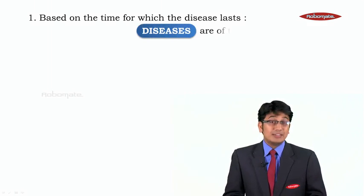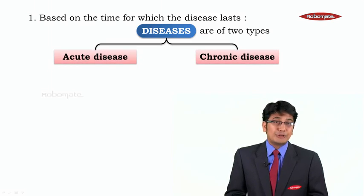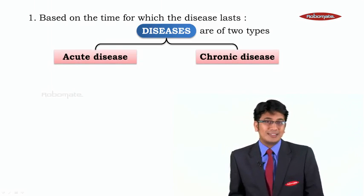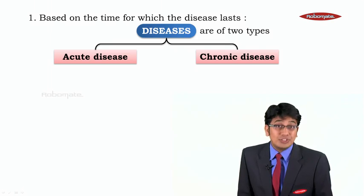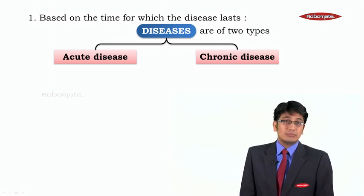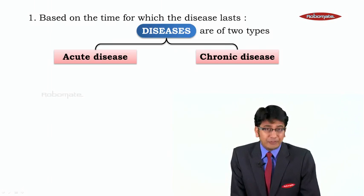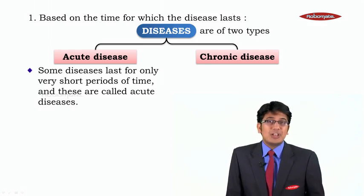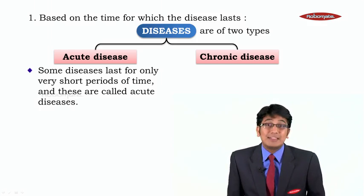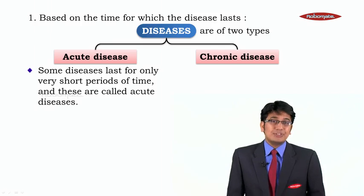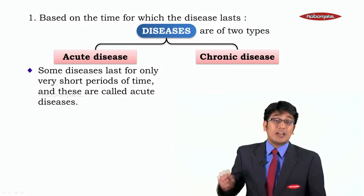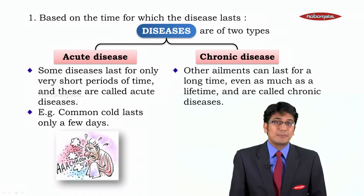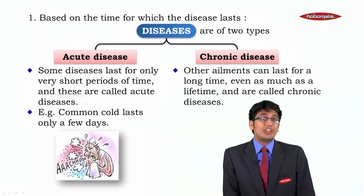Number one: based on the time for which the disease lasts, diseases are of two types — acute and chronic. Acute diseases are those which come and go very quickly. Chronic diseases are those which come and don't go; they are with you for years and years. Acute diseases last for only very short periods of time and have no major signs or symptoms. For example, the common cold lasts only a few days or a week.